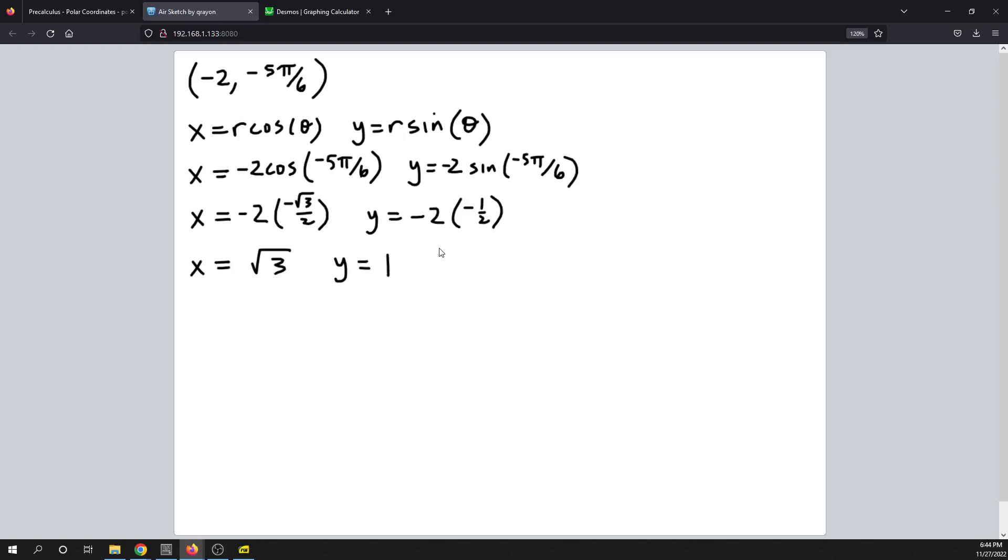All right, and so the Cartesian or rectangular coordinate system points for polar coordinates negative 2, negative 5 pi over 6 is square root of 3, 1.